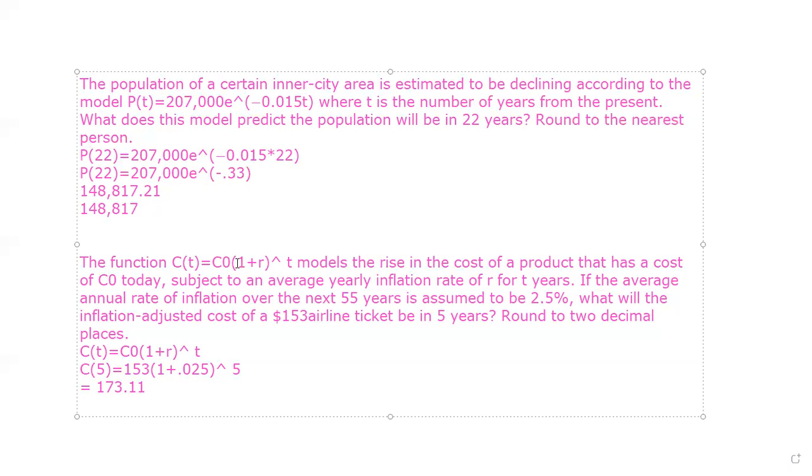All right. So on this next one, we have a similar situation, but it's a different function. So you'll notice on both of these problems, they give you the equation. Well, that is good because then you don't have to come up with the equation. That's kind of nice. And so this one says we've got a function called C and it equals C zero and then one plus R raised to the T power. So once again, I want you to realize this is a carrot.